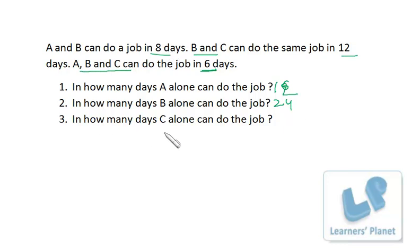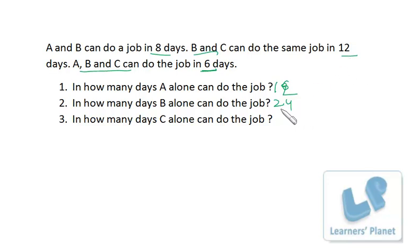Similarly, in how many days can C alone do the job? B and C together take 12 days. B alone can do the entire work in 24 days, so in 12 days B will be doing half of the work. That means C will also be doing half of the work in 12 days. So C can also do the entire work in 24 days.